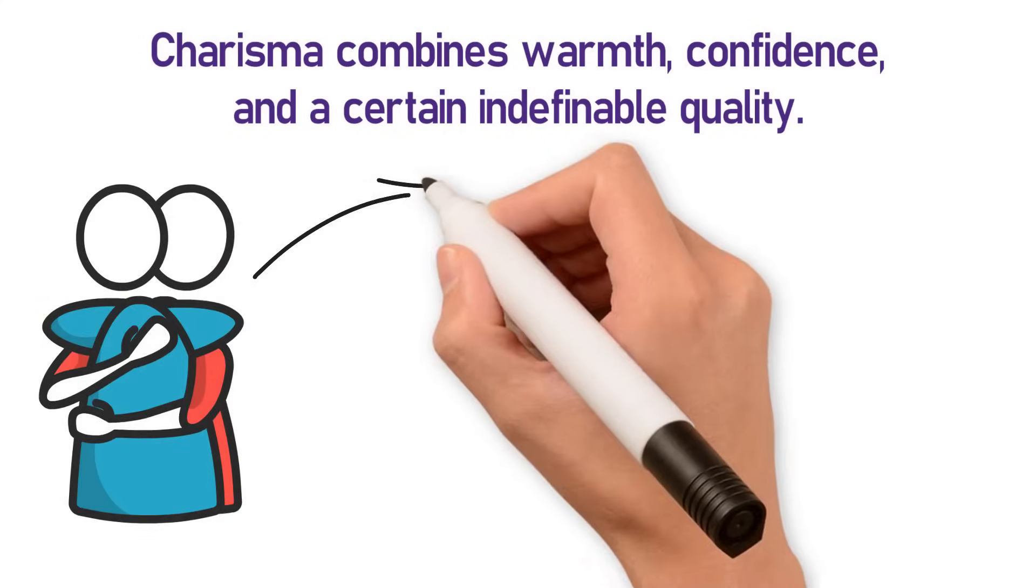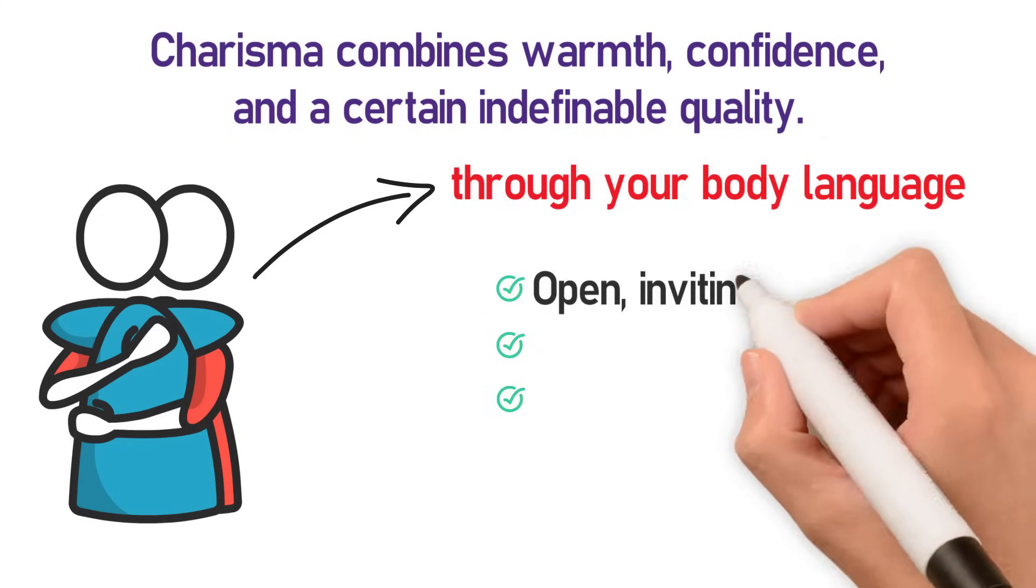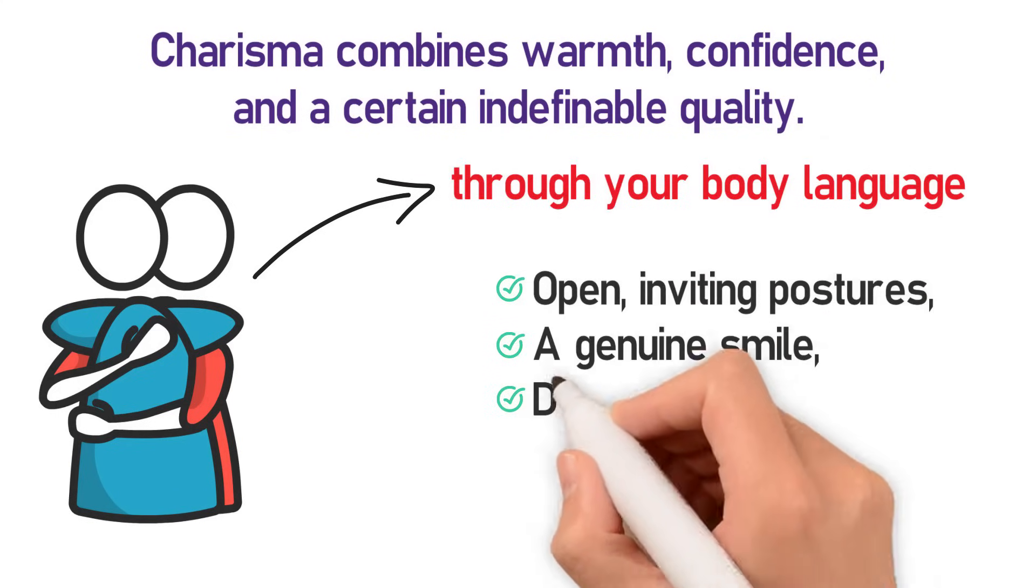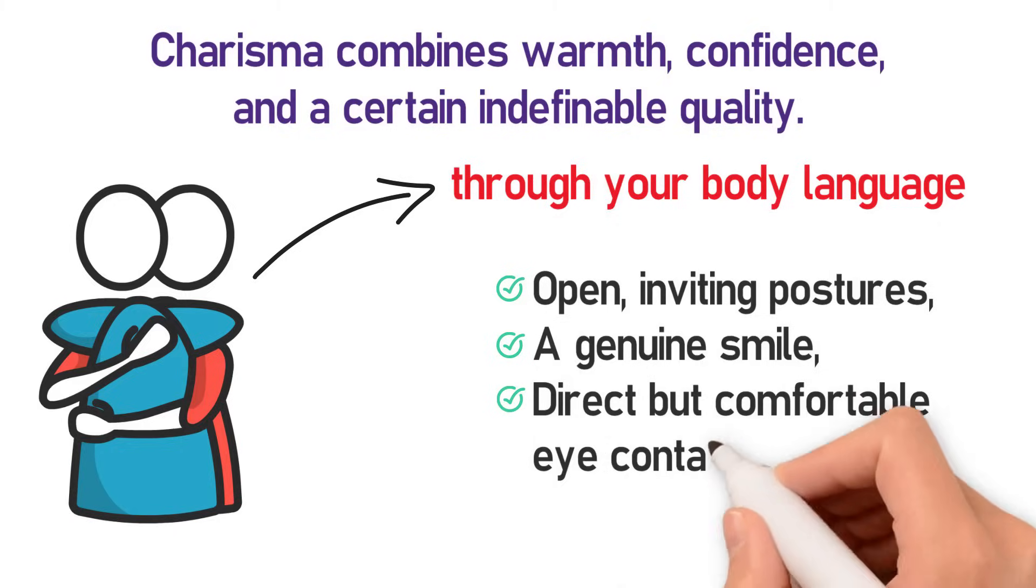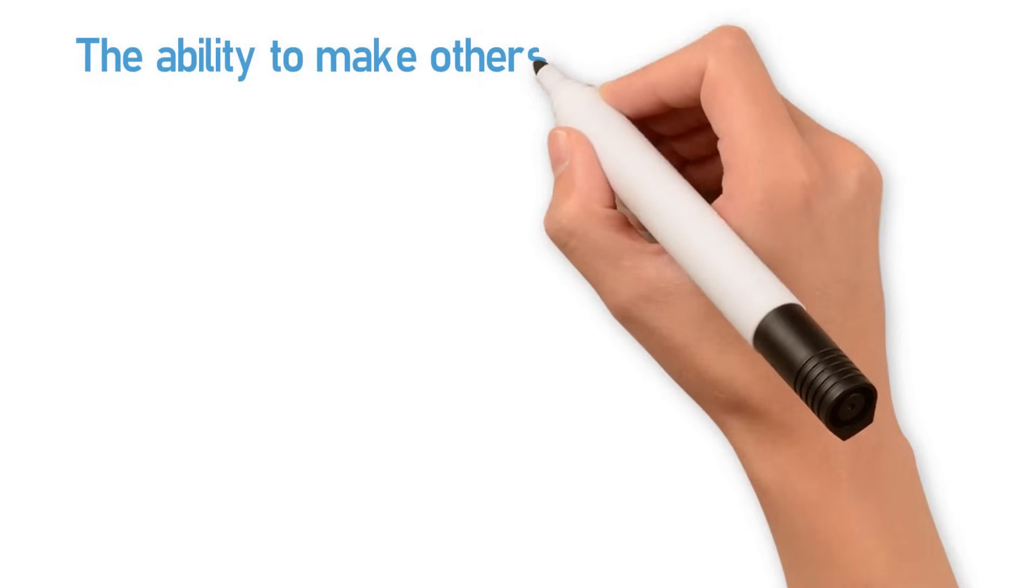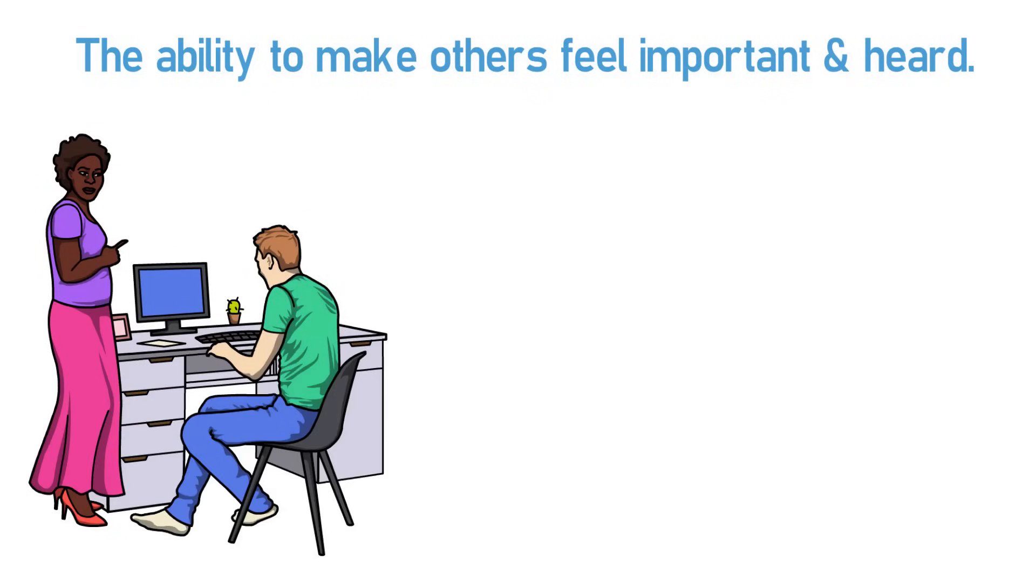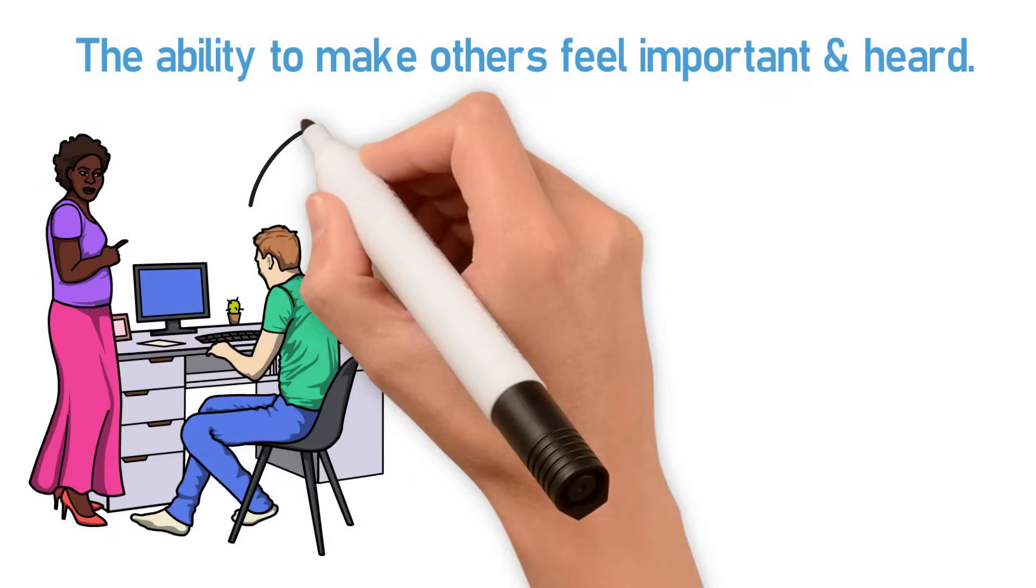One way to appear more charismatic is through your body language. Open, inviting postures, a genuine smile, and direct but comfortable eye contact can make you appear more approachable and engaging. Another aspect of charisma is the ability to make others feel important and heard. This can be achieved through active listening and showing genuine interest in what others are saying.